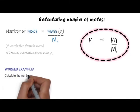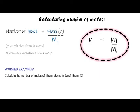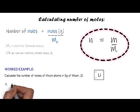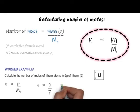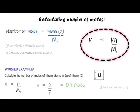Let's try a worked example: calculate the number of moles of lithium atoms in 5 grams of lithium. n equals m over Mr. The mass m is 5 grams, and from the periodic table the relative atomic mass of lithium is 7. So we do 5 divided by 7, which gives us 0.7 moles. Make sure you show your working because you can still get one mark even if the answer is wrong.